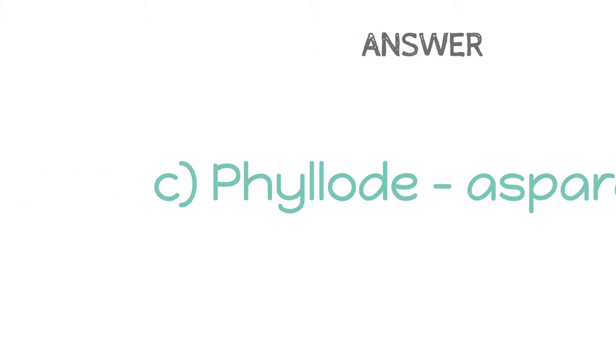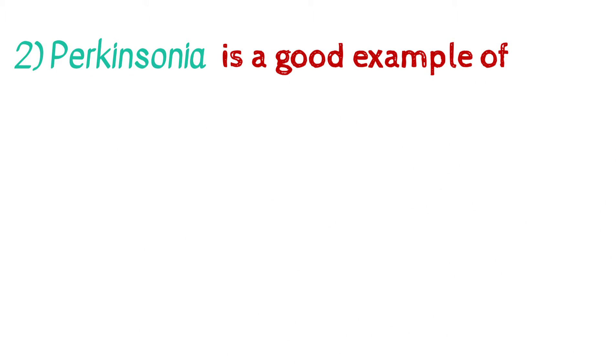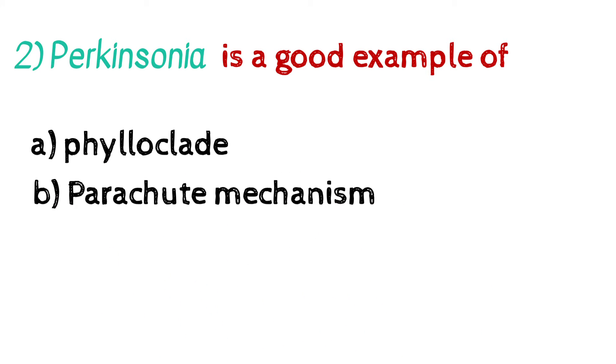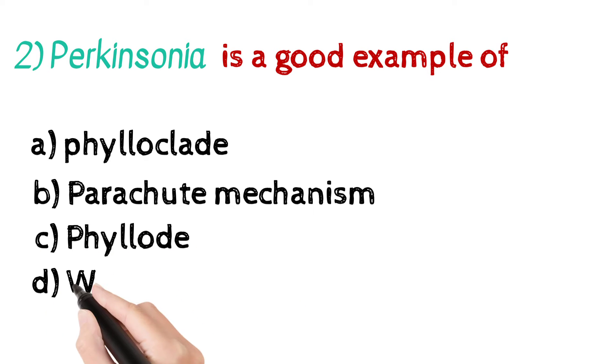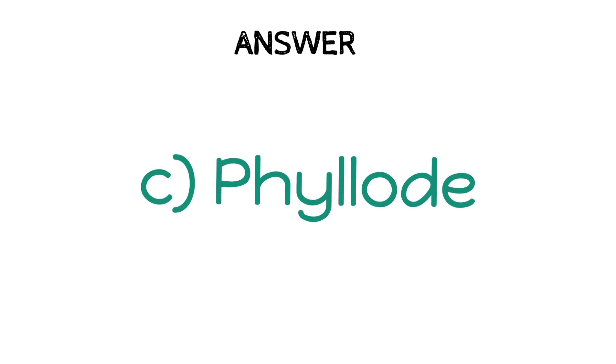Question number 2: Parkinsonia is a good example of A. Phylloclade, B. Parachute mechanism, C. Phyllode, D. Winged fruits. And the answer is C, Phyllode.